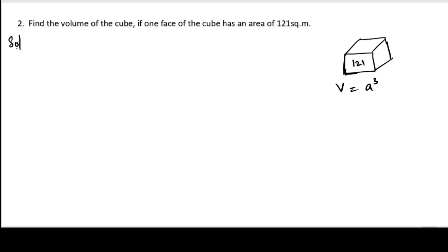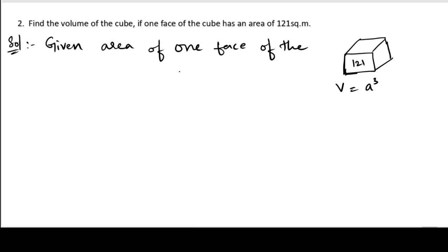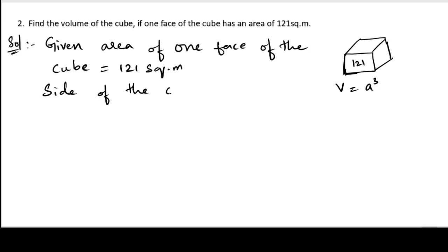Let us start the solution. First of all, we will write what is given. Given: area of one face of the cube equals 121 square meters. Now, I need the side of the cube. To get the side of the cube, we need to find out the square root of 121. The square root of 121 is 11 meters.